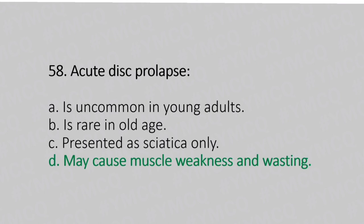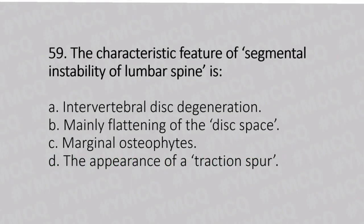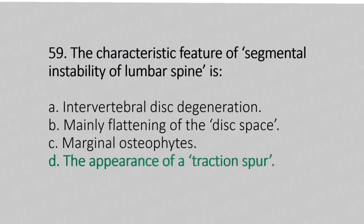Now let's move to question number 59. The characteristic feature of segmental instability of the lumbar spine is. Option A: intervertebral disc strain ratio. Option B: mainly flattened disc shape. Option C: marginal osteophyte. Option D: appearance of the traction spur. And the answer is Option D, the appearance of the traction spur.